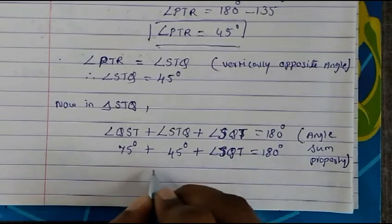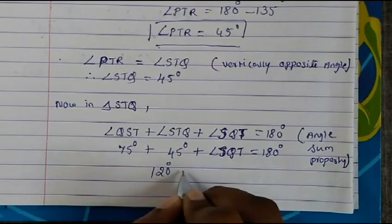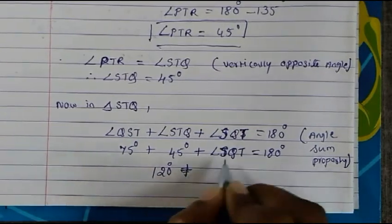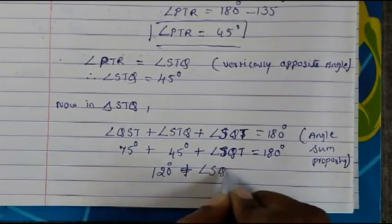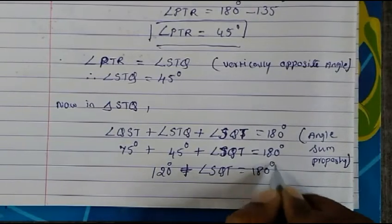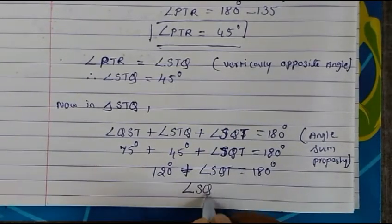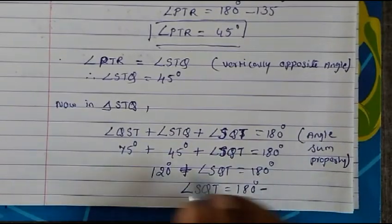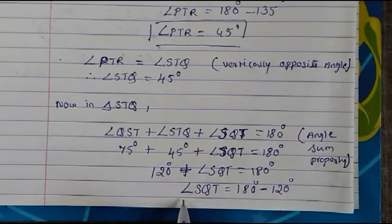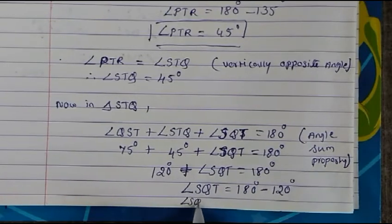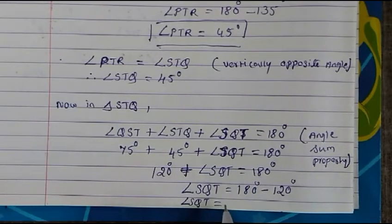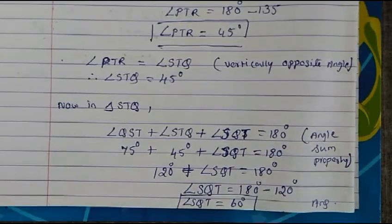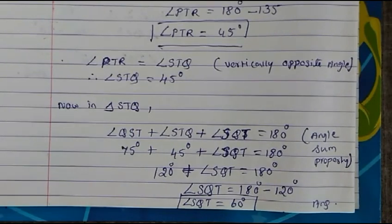Summing the known angles gives us 120. So 120 plus angle SQT equals 180, which means angle SQT equals 60 degrees. So this is our answer. That's it — thank you and God bless you.